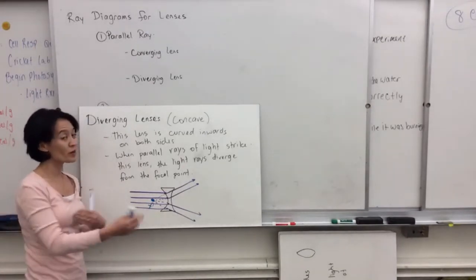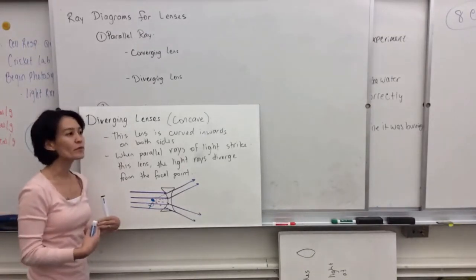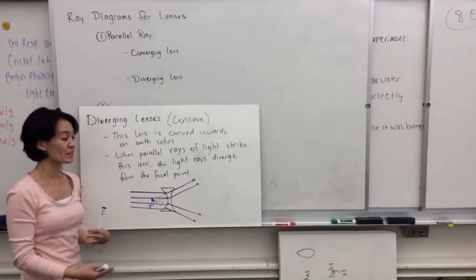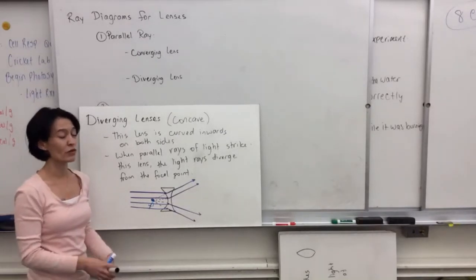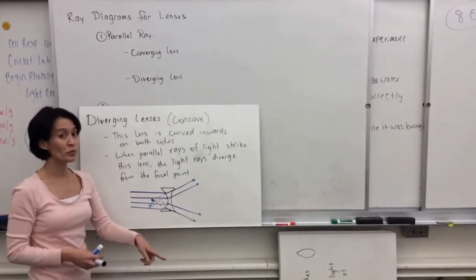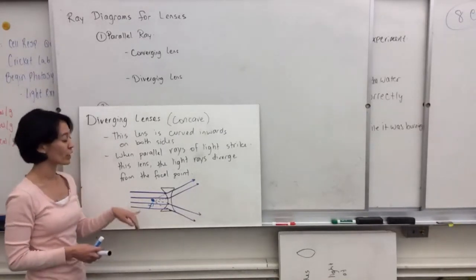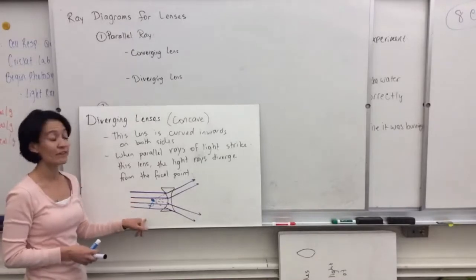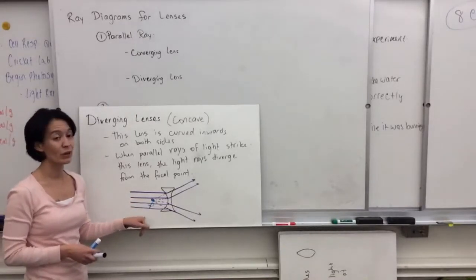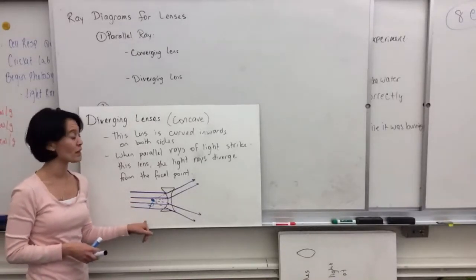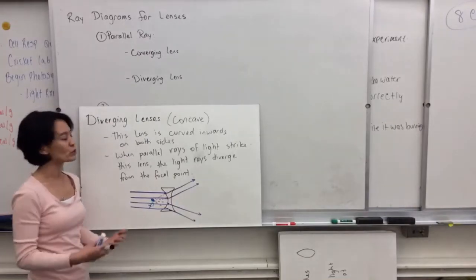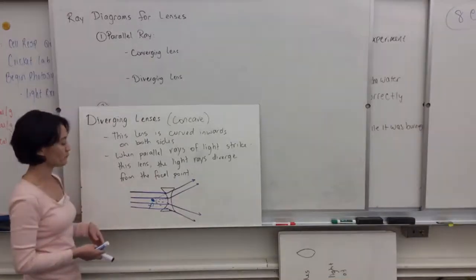The focal point is on a different side, and we'll get into what that does in terms of the mathematics. For a converging lens, the focal length is positive, and for a diverging lens, the focal length is negative. That definitely affects the mathematics of how we solve for where an image would appear.